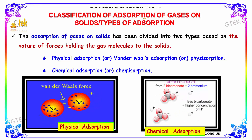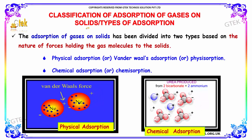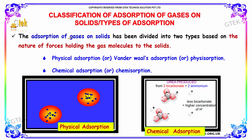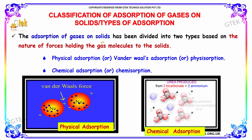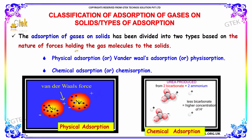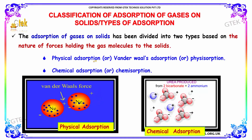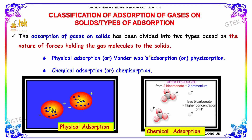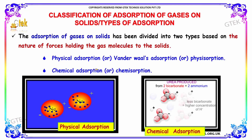Classification of adsorption of gases on solids: the adsorption of gases on solids has been divided into two major types based on the nature of forces holding the gas molecule to the solid. One is physical adsorption, or Van der Waals adsorption, or physisorption. The second one is chemical adsorption, or chemisorption.